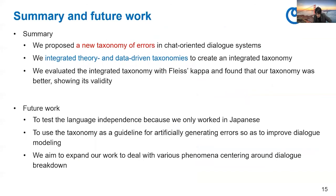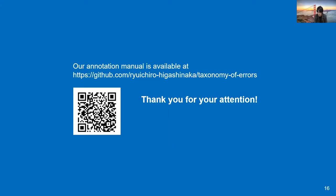To summarize, we proposed a new taxonomy of errors in chat-oriented dialogue systems. We integrated theory-driven and data-driven taxonomies to create an integrated taxonomy. We evaluated it with Fleiss' kappa and found that our taxonomy was better, showing its validity. Finally, our annotation manual — both Japanese and English versions — is available on GitHub. Thank you for your attention.